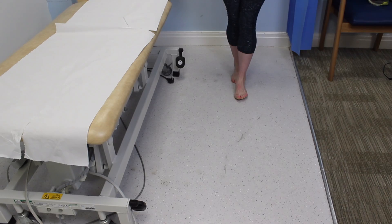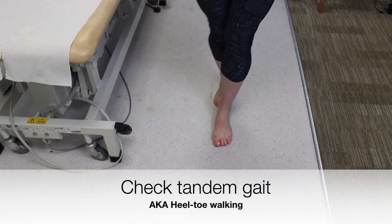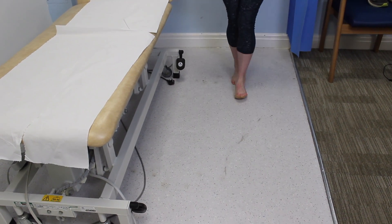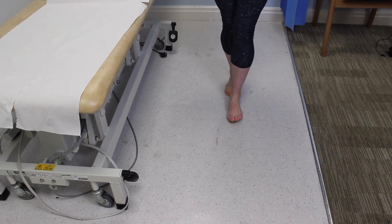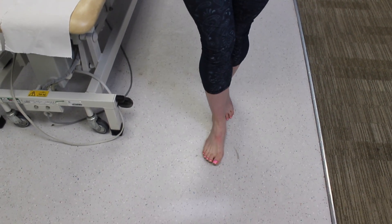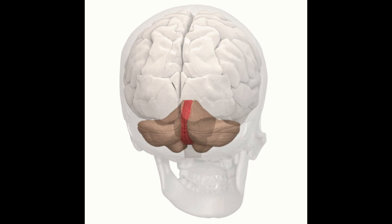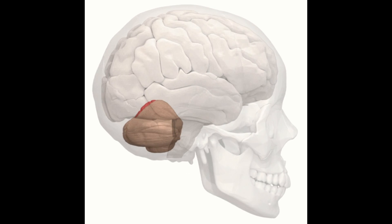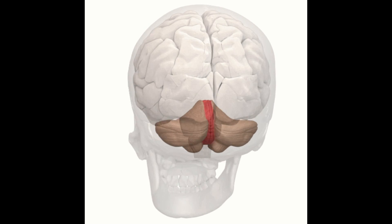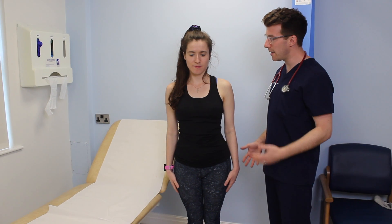Next, if appropriate to do so, check tandem gait, which is referred to as heel-to-toe walking. Heel-to-toe walking can exacerbate underlying balance problems, making it easier to identify more subtle ataxia. It's particularly useful for identifying issues with the cerebellar vermis, which is located in the medial cortex of the cerebellum, and is often affected in alcoholism.